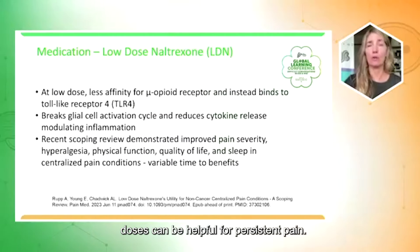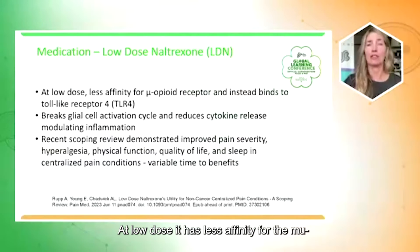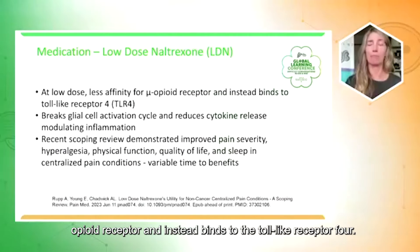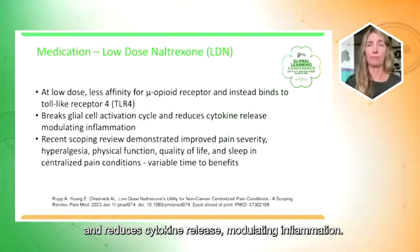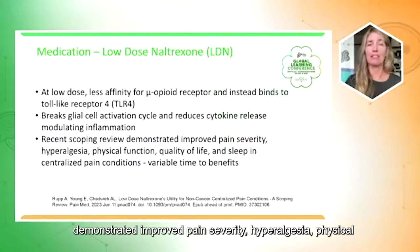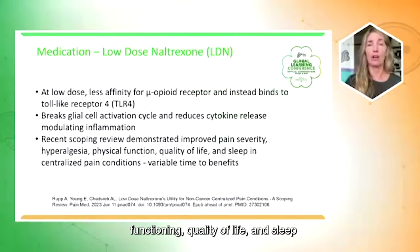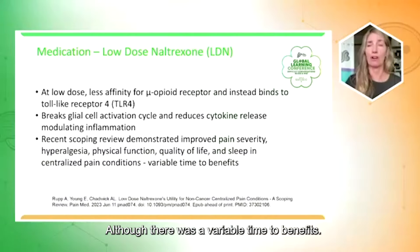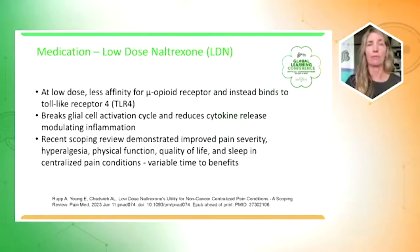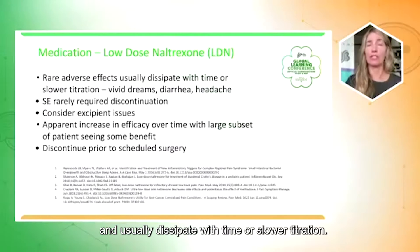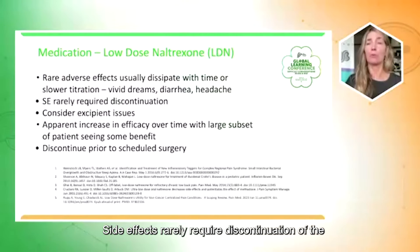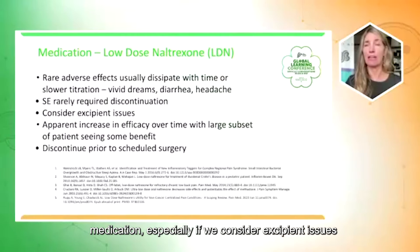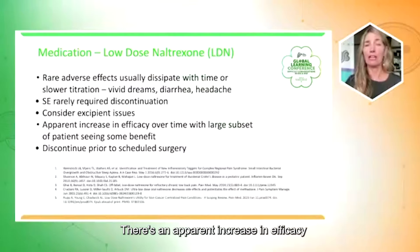Naltrexone is an opioid antagonist and in low doses can be helpful for persistent pain. At low dose, it has less affinity for the mu opioid receptor and instead binds to the toll-like receptor 4. It breaks the glial cell activation cycle and reduces cytokine release, modulating inflammation. A recent scoping review demonstrated improved pain severity, hyperalgesia, physical functioning, quality of life, and sleep in centralized pain conditions, although with variable time to benefits. Adverse effects with low dose naltrexone are rare and usually dissipate with time or slower titration — they can include vivid dreams, diarrhea, and headache — and rarely require discontinuation, especially if excipient issues are addressed.